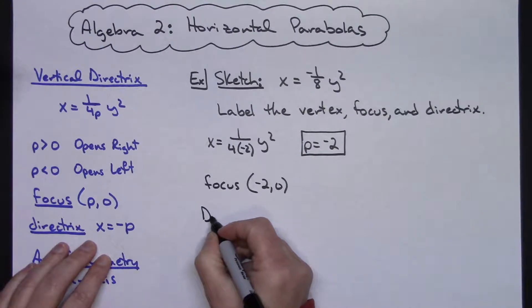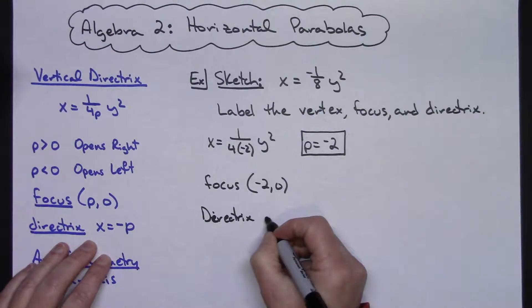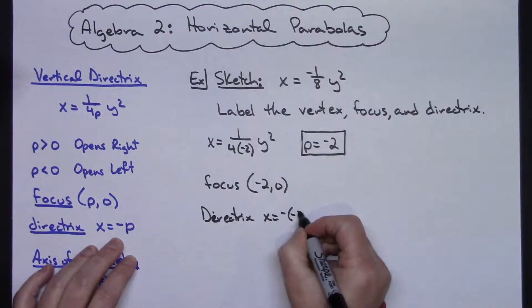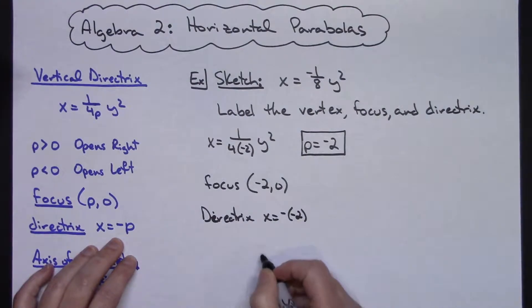I know my directrix is going to be x equals a negative p. Well, a negative negative 2 is going to give us a positive 2. So x equals 2.